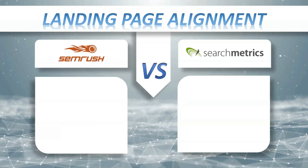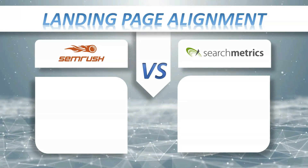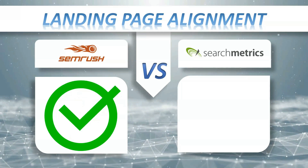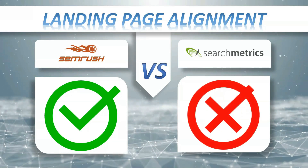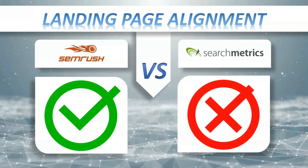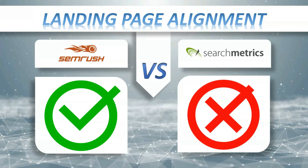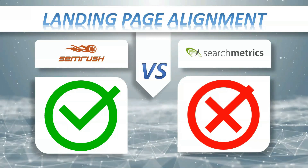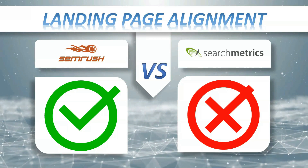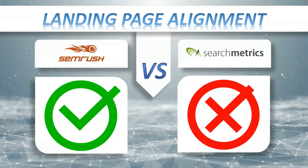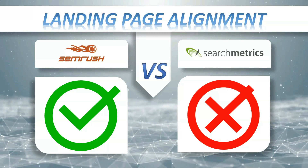Landing Page Alignment: SEMrush plus, Search Matrix Essentials minus. When you're tracking your SEO or PPC efforts, you'll want to know what pages on your site are performing the best. Seeing your competitors' top performing landing pages can also help you understand what works well with your audience.